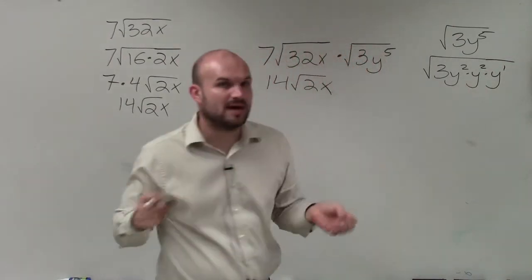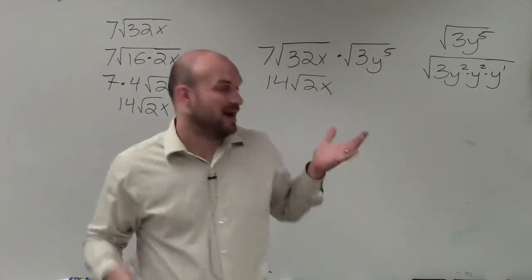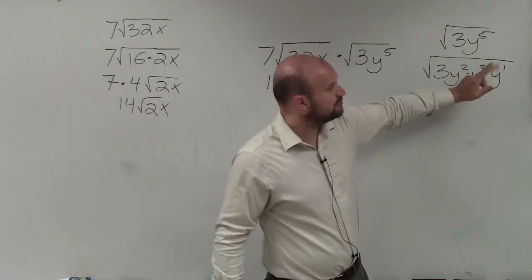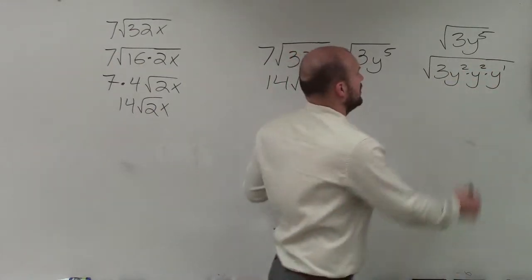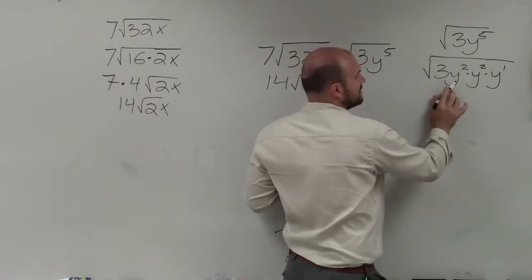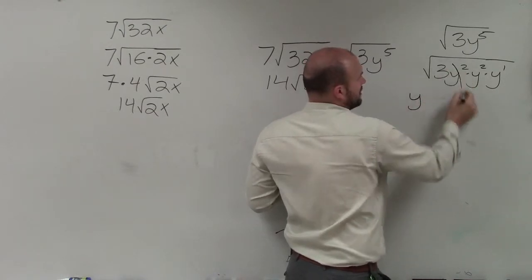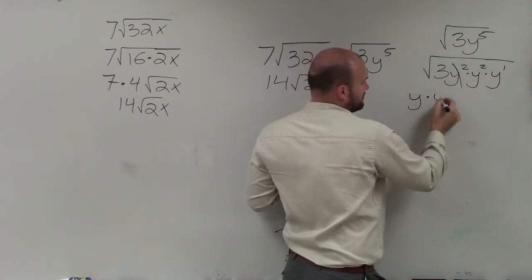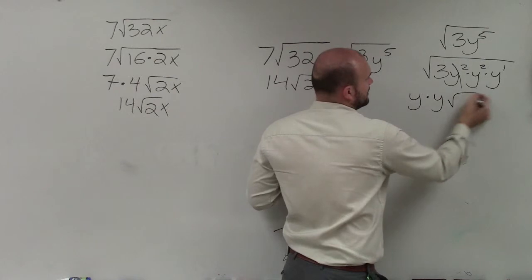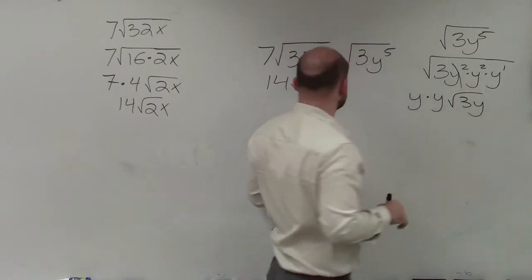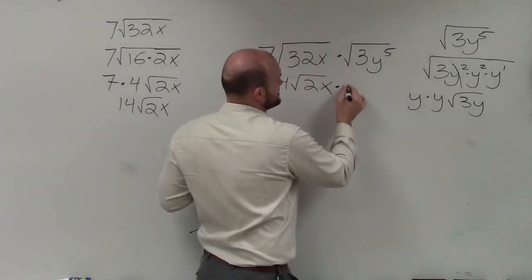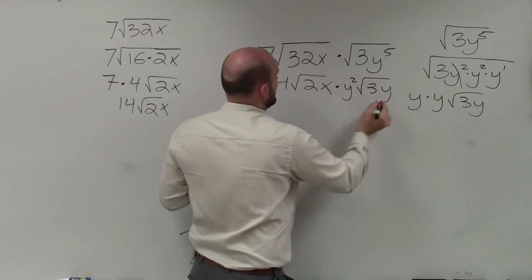Because remember, when you multiply exponents, you add the powers. 2 plus 2 plus 1 is going to give you 5. Well, the square root of y squared is going to be y. The square root of another y squared is going to be y times square root of 3y. So basically, what I'm multiplying is y squared times the square root of 3y.